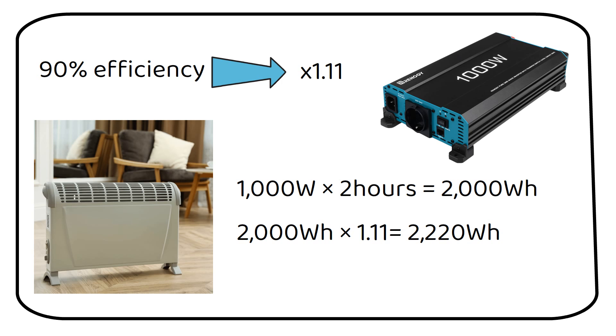Another critical factor to consider is the idle power consumption of the inverter. For instance, a 3000W inverter might draw 30W continually, leading to a loss of 720Wh per day. This is why I recommend to turn off your inverter when it's not in use. This idle consumption is a silent power consumer in your system, a factor often overlooked by many.